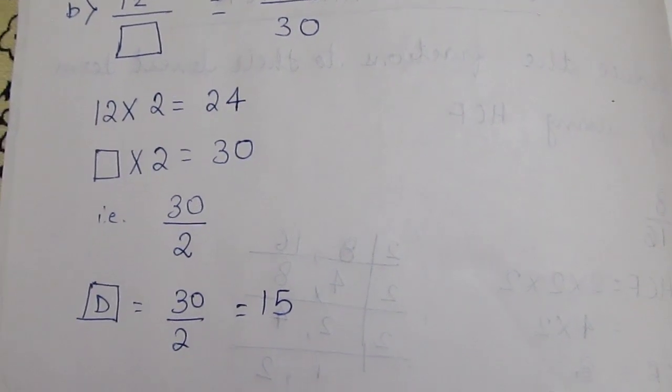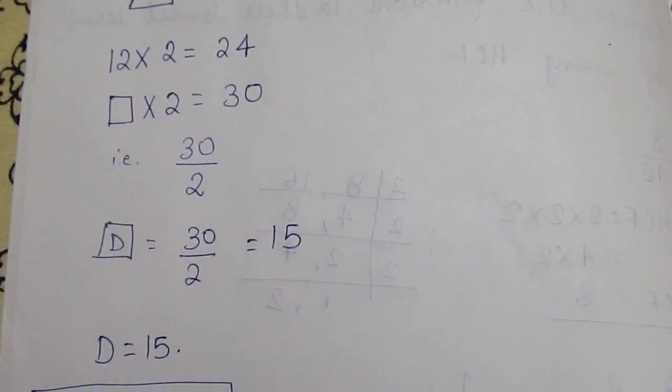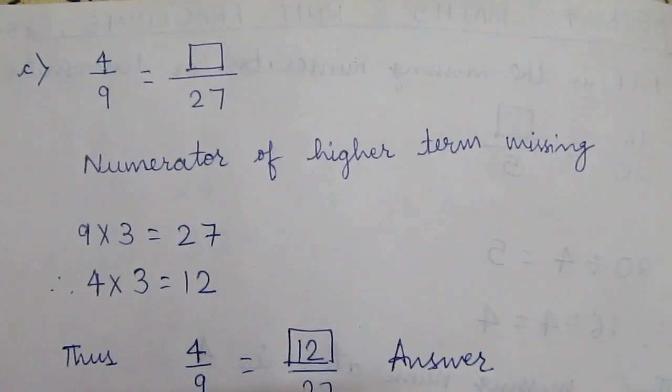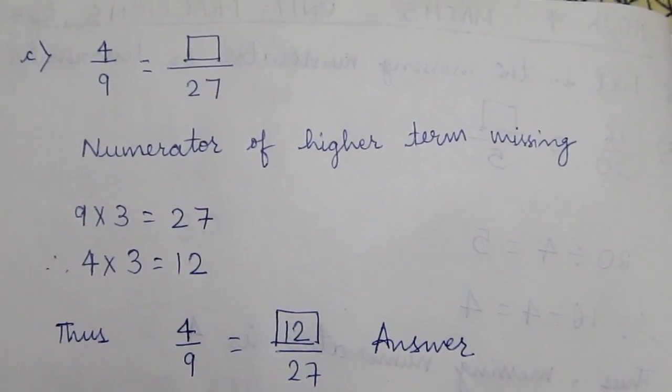Therefore the missing denominator is 15. Next question: 4/9 = ?/27. The numerator of higher term is missing.